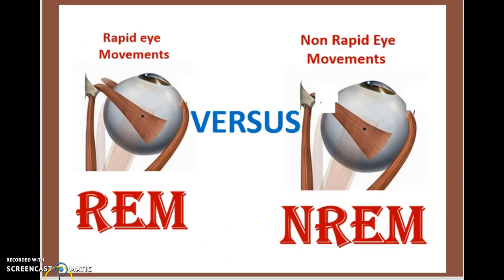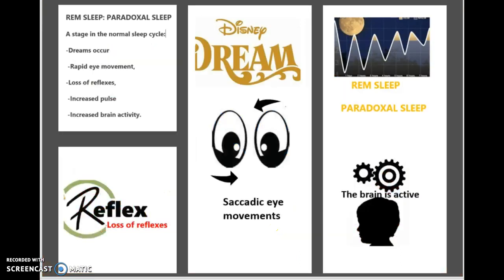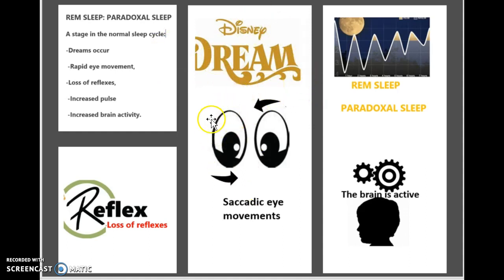Now, what is the difference between rapid eye movement — or REM sleep — and non-rapid eye movement, which is non-REM sleep? REM sleep is also known as paradoxical sleep. It is a stage in the normal sleep cycle where dreams generally occur. There will be rapid eye movements, a very high loss of reflexes, increased pulse, and quite an increase in brain activity.